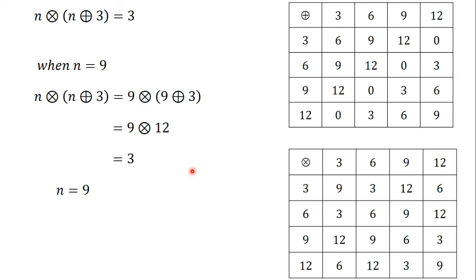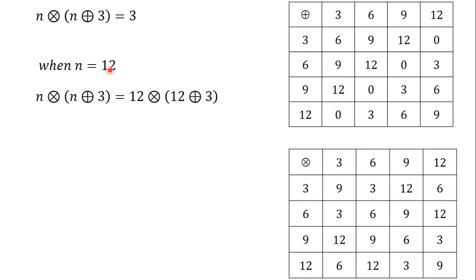We have seen that 3 and 9 satisfy the equation. Let's try out the last number, which is 12. When n equals 12, the expression n times (n plus 3) becomes 12 times (12 plus 3). From the addition table, 12 plus 3 is 0. So we have 12 times 0. We don't have 0 in our set, so we can't find 12 times 0 from the table. That means n equals 12 will not satisfy the equation.